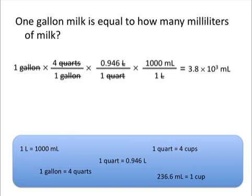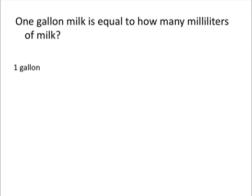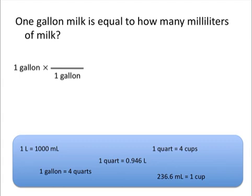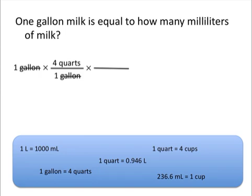Let's try this problem again using different conversion factors. Again, we start with 1 gallon. We know we'll need a conversion factor with gallons on the bottom, and the only choice available is that 1 gallon is equal to 4 quarts. So we put 4 quarts on top, which allows us to cancel out gallons. For our next conversion factor, quarts needs to go on the bottom. We can see that 1 quart is equal to 4 cups. So we have quarts on the bottom and 4 cups on the top. This still allows us to cancel out units of quarts, and if we stopped here we would have units of cups.